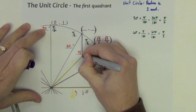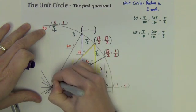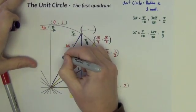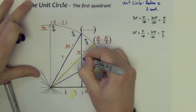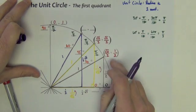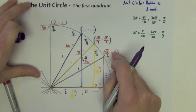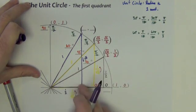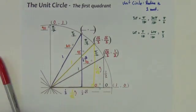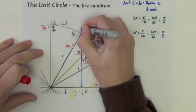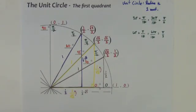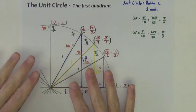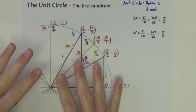The last triangle is another 30-60-90. It's essentially the same calculations, but the legs are swapped — the short leg is horizontal at one half, and the long leg goes up at square root of three over two. So this point is (one half, square root of 3 over 2). That completes the first quadrant of our unit circle. Now let's build the entire unit circle on the next slide.